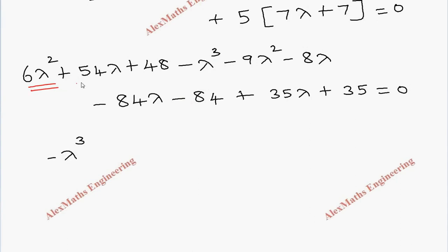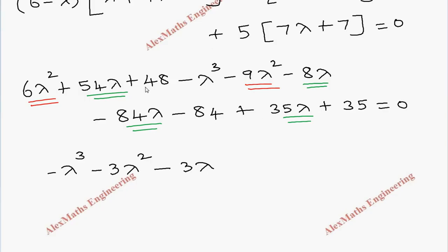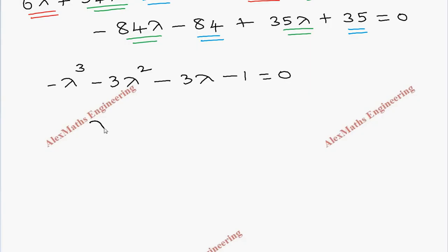Now let's rearrange. First, minus lambda cubed. Then combining the squared terms: 6 lambda squared minus 9 lambda squared gives minus 3 lambda squared. Then the lambda terms: 54 minus 8 minus 84 plus 35 gives minus 3 lambda. Then all the constants: 48 minus 84 plus 35 gives minus 1, equal to zero. Changing sign throughout gives lambda cubed plus 3 lambda squared plus 3 lambda plus 1 equal to zero.